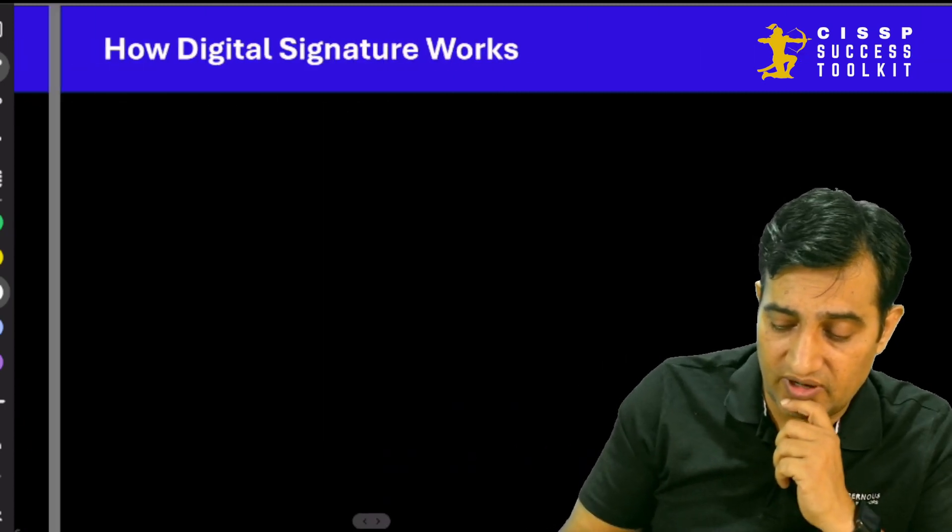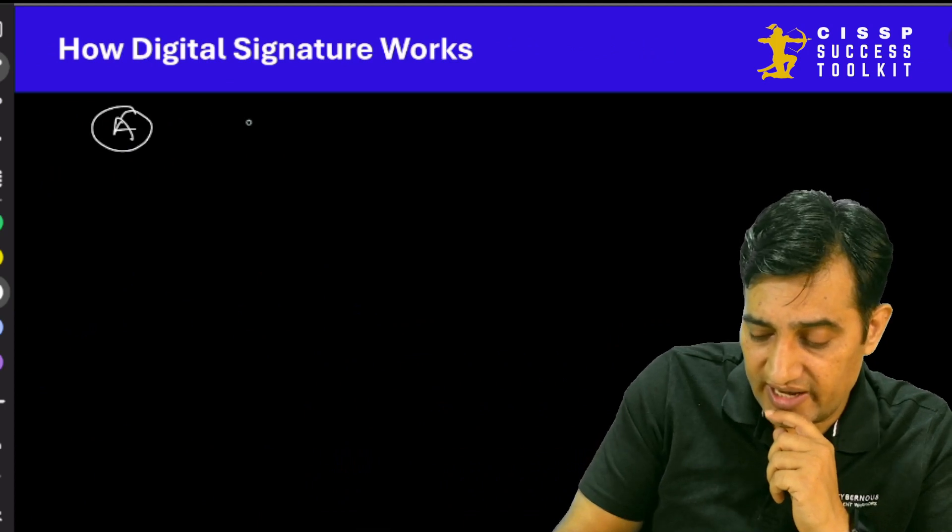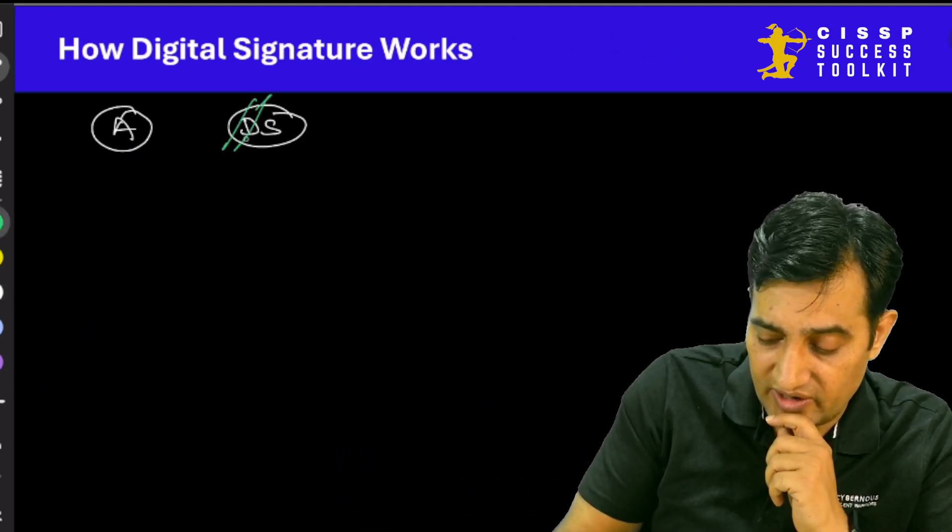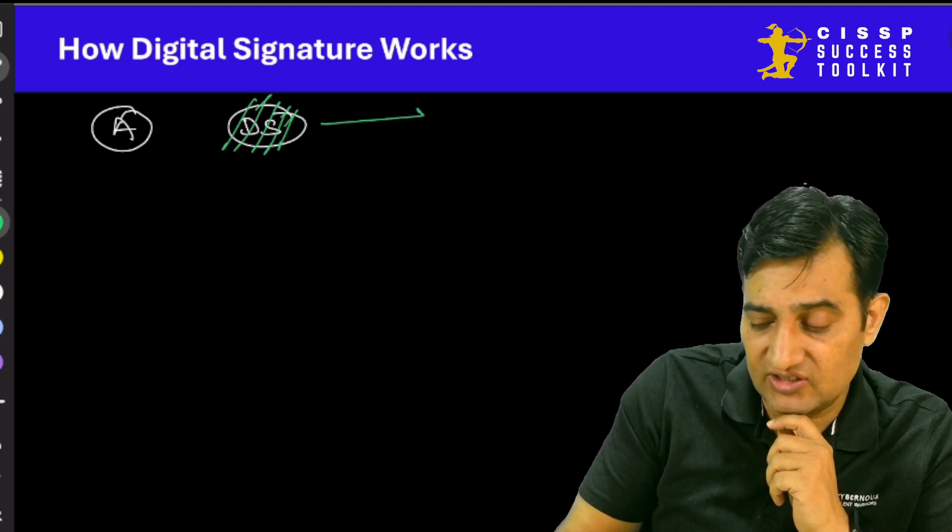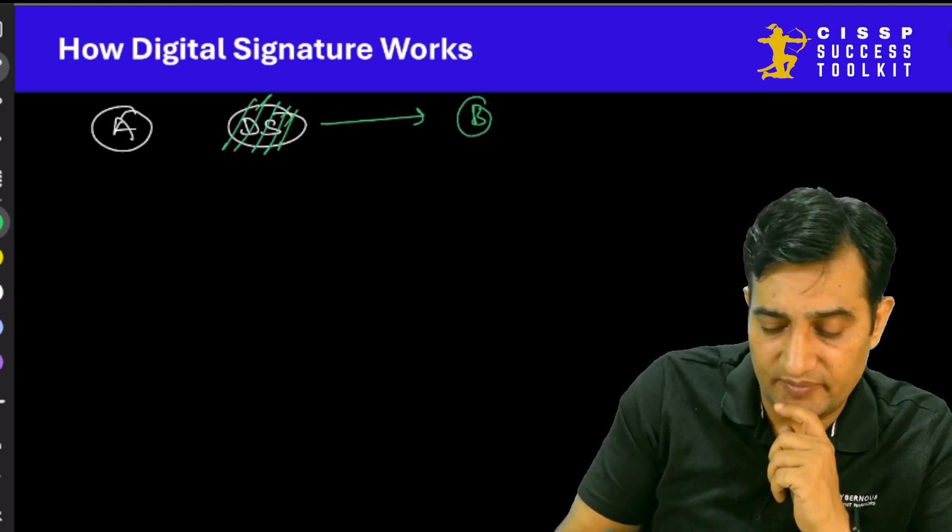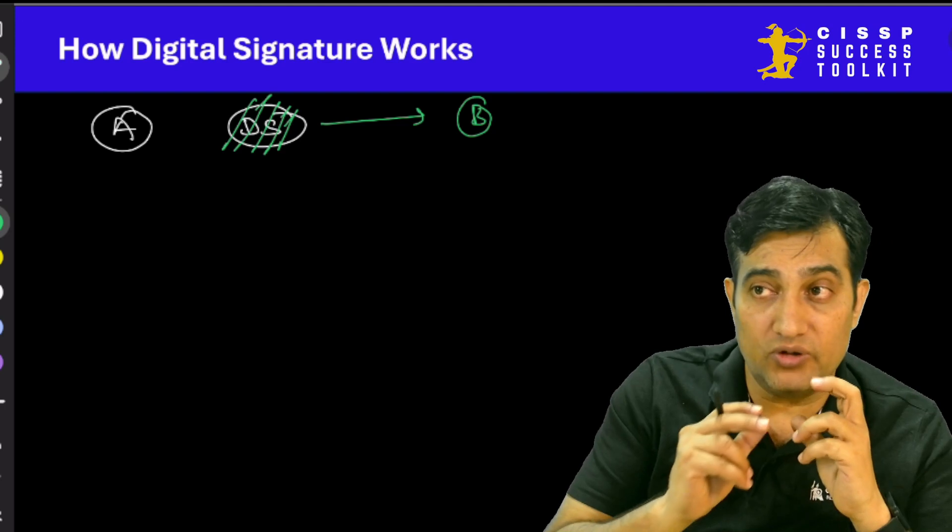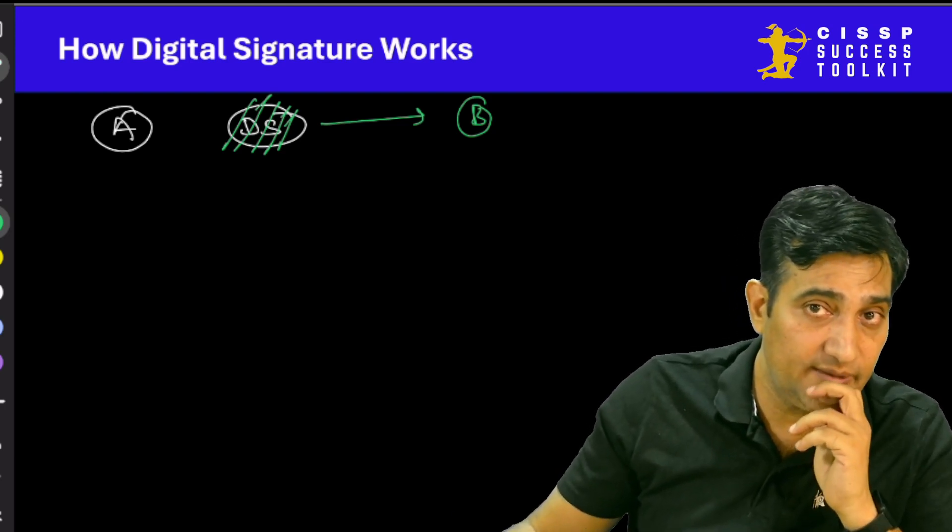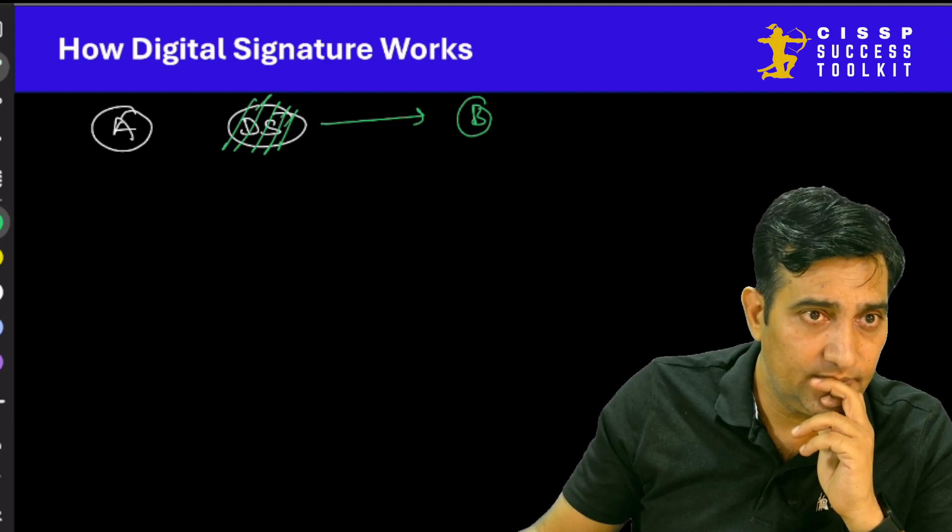What it doesn't give you is called confidentiality. When somebody is sending this entire digitally signed message, anybody can go and modify the entire thing, because nowhere we have spoken about confidentiality here until now. So whenever Mr. A is going to send a digitally signed message, it has to be encrypted first, and then send to the other party B. You should never be sending a digital certificate which is not encrypted.